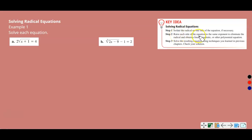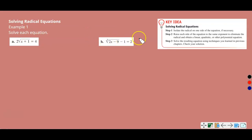Step 2: Raise each side of the equation to the same exponent to eliminate the radical and obtain a linear, quadratic, or other polynomial equation. If you have a square root, raise each side to the second power. If you have a cube root, raise each side to the third power. Step 3: Solve the resulting equation using techniques from previous chapters — inverse operations, basically.